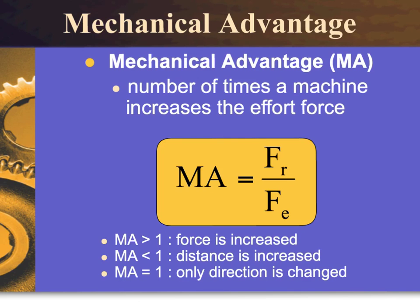This video is going to review mechanical advantage of various simple machines. Mechanical advantage is abbreviated MA, and it's the number of times a machine increases the effort force. The formula for mechanical advantage is resistant force divided by effort force. The reason mechanical advantage is calculated is to determine what exactly is going on within the machine.